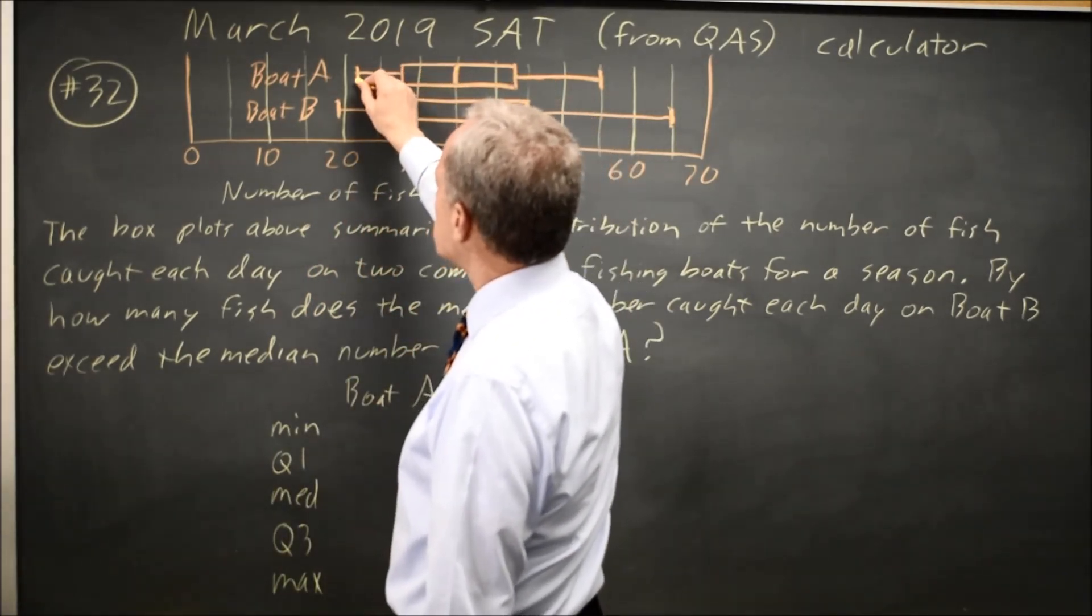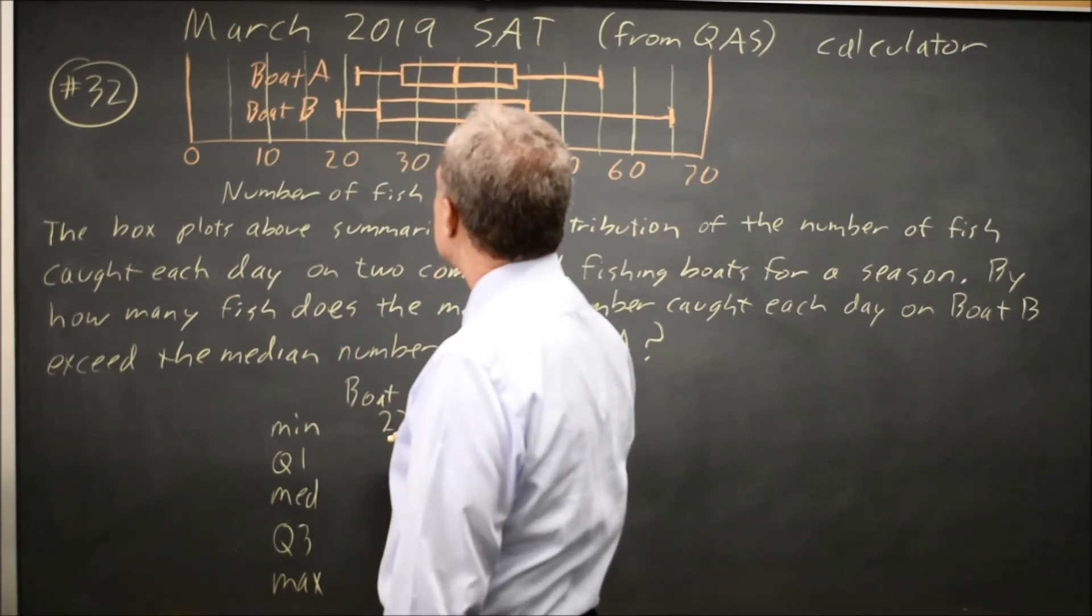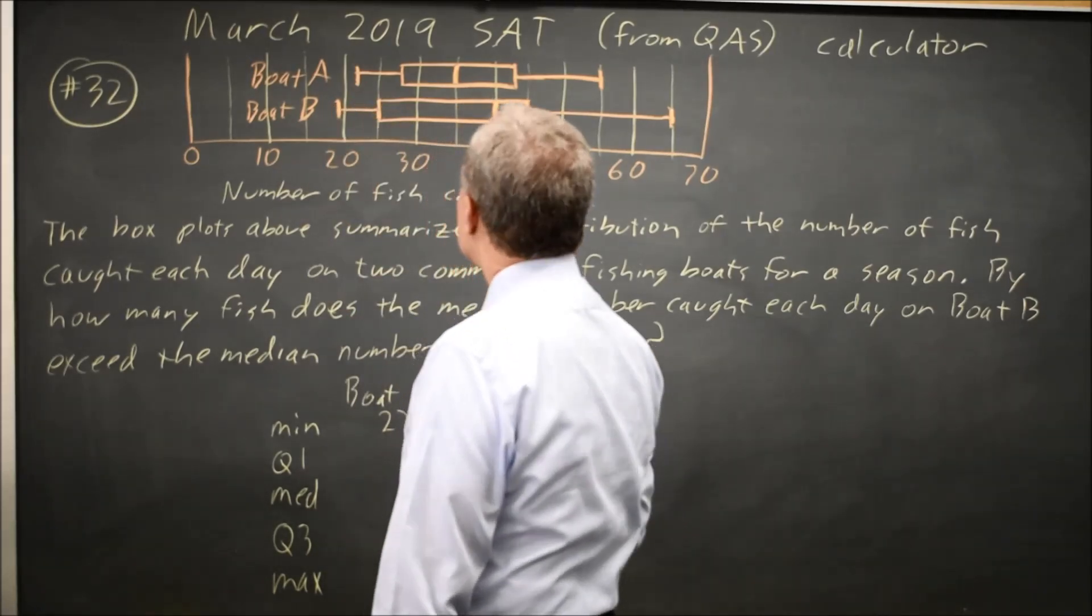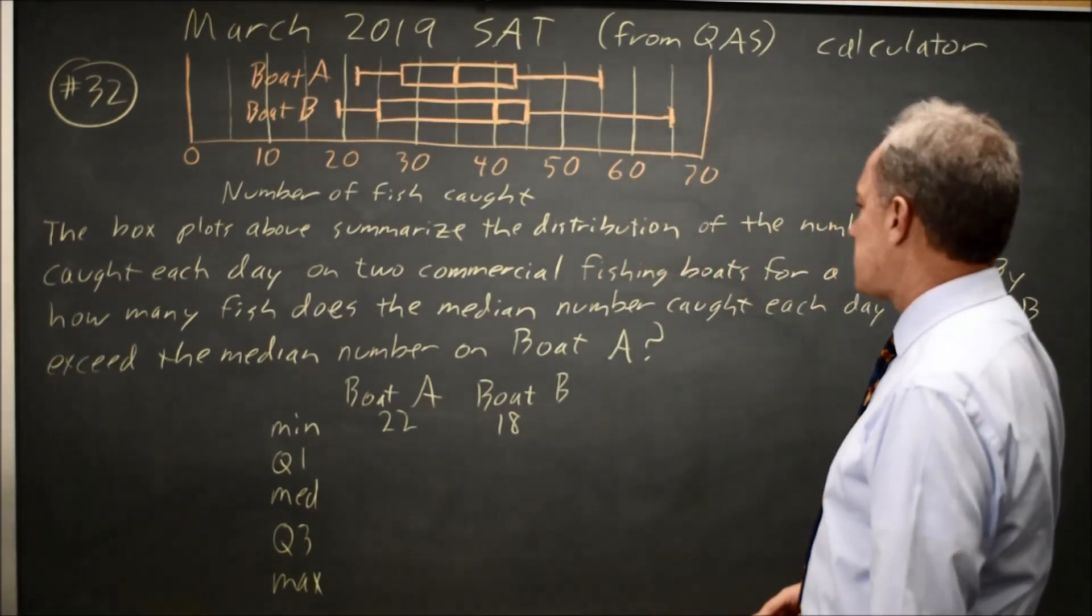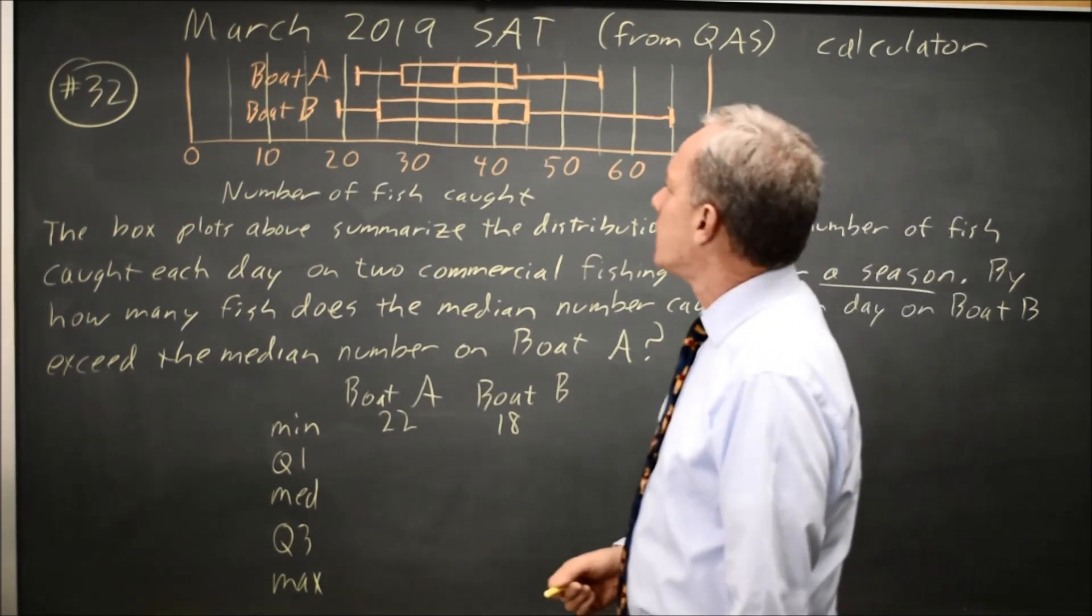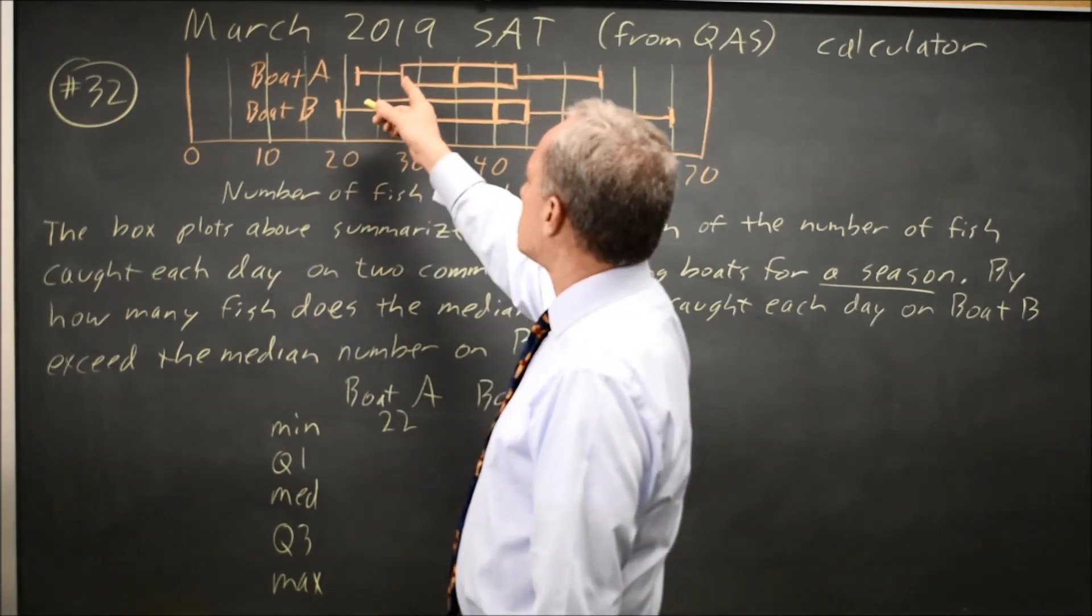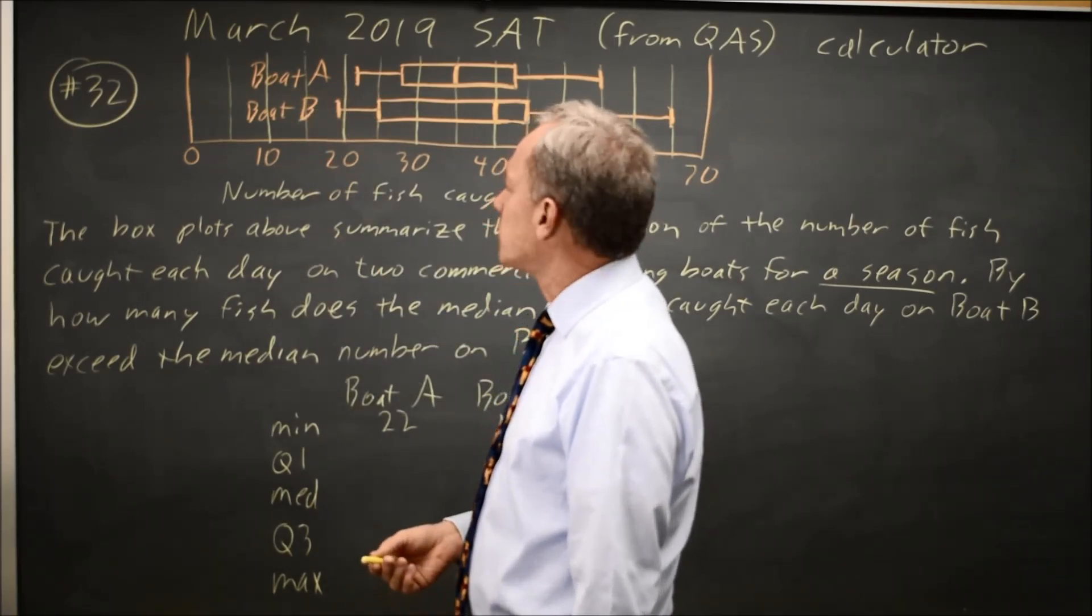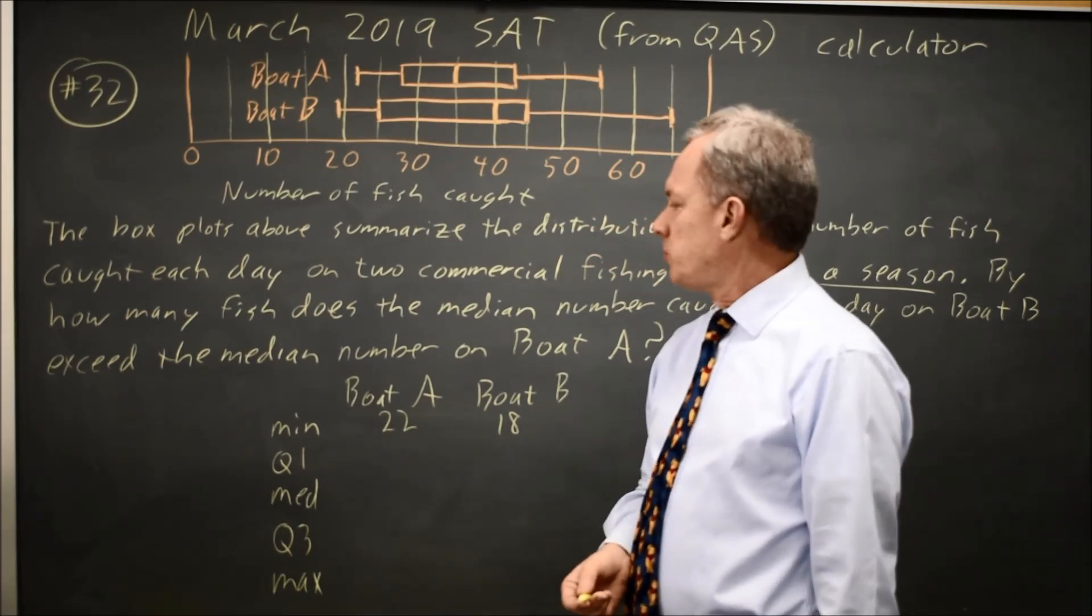For boat A, it looks to me like the minimum value was 22, and for boat B, the minimum value was 18, where the minimum value is the smallest value observed in, in this case, the season. And the minimum value is indicated by the vertical bar at the end of what you sometimes call the whisker, the narrow line that comes out from the larger rectangle. And the minimum is the lowest value.